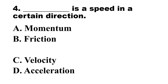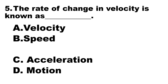Number 4. Blank is a speed in a certain direction. Number 5. The rate of change in velocity is known as blank. A. Velocity. B. Speed. C. Acceleration. D. Motion.